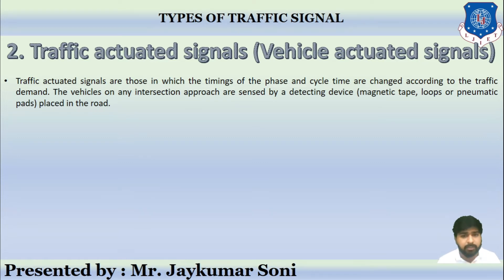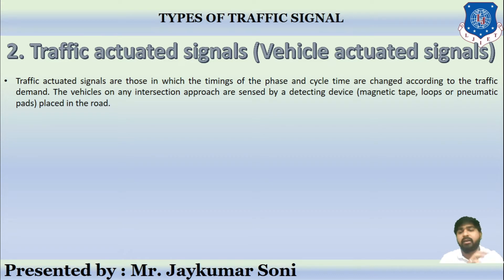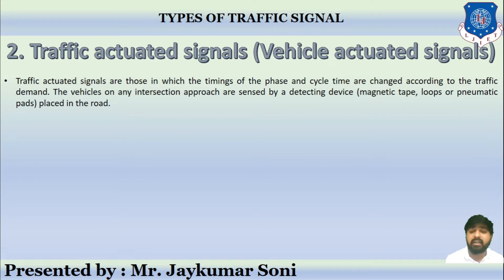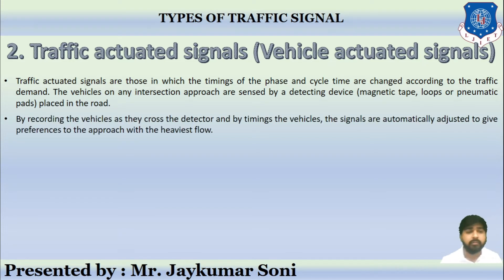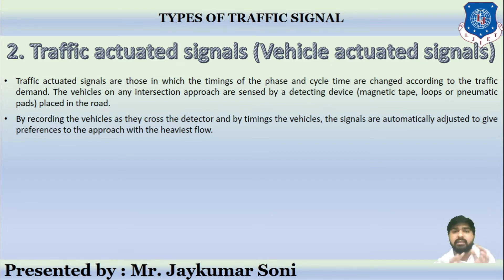The vehicles on any intersection approach are sensed by a detecting device. As we learned in traffic volume calculation, there are magnetic devices, radar (radio detecting and ranging), LiDAR (linear detecting and ranging), magnetic tape, and pneumatic pads. Various IoT and sensor devices are provided to sense vehicle presence at the intersection approach. By recording vehicles as they cross the detector and by the timing of the vehicle, signals are automatically adjusted to give preference to the approach with the heaviest flow.